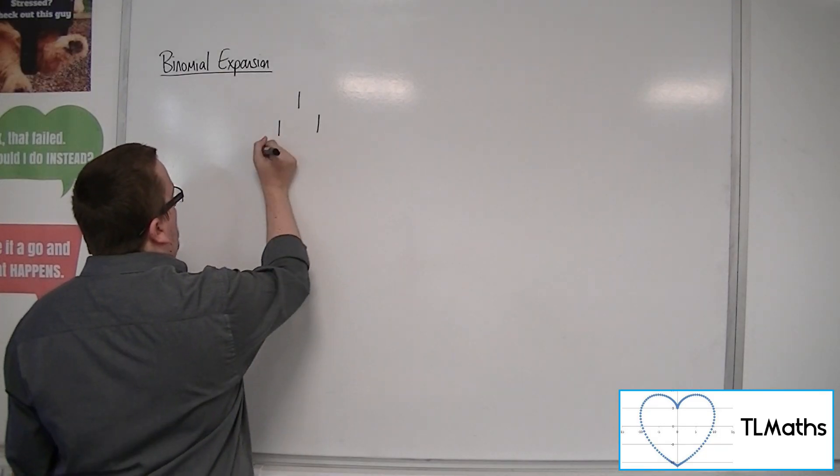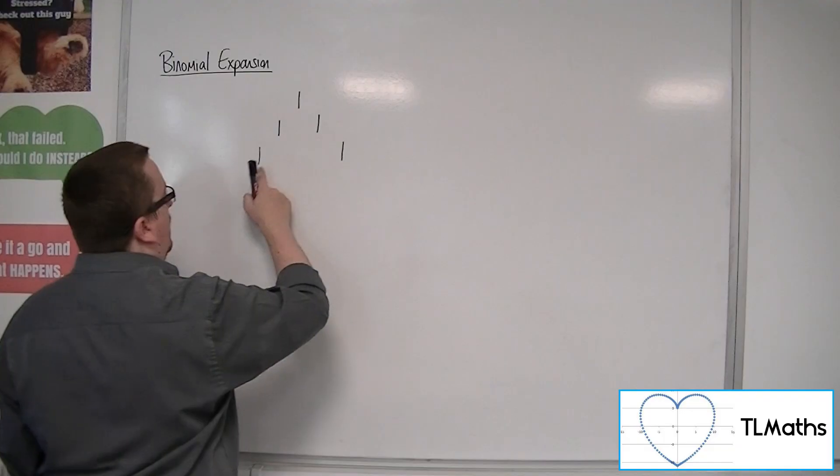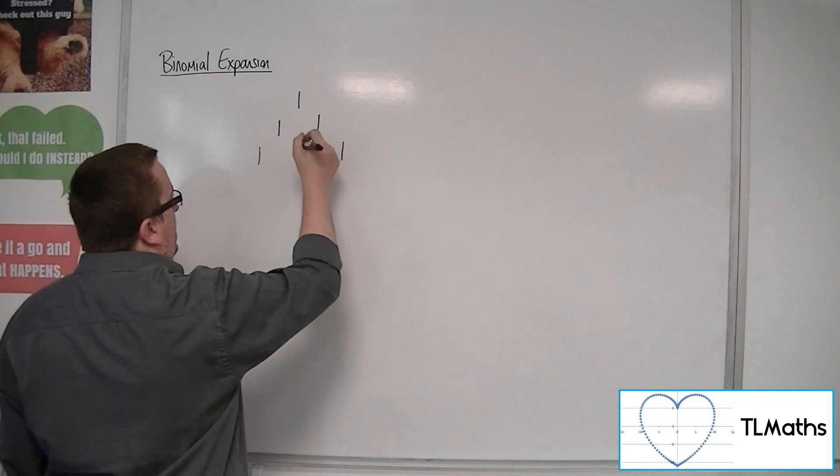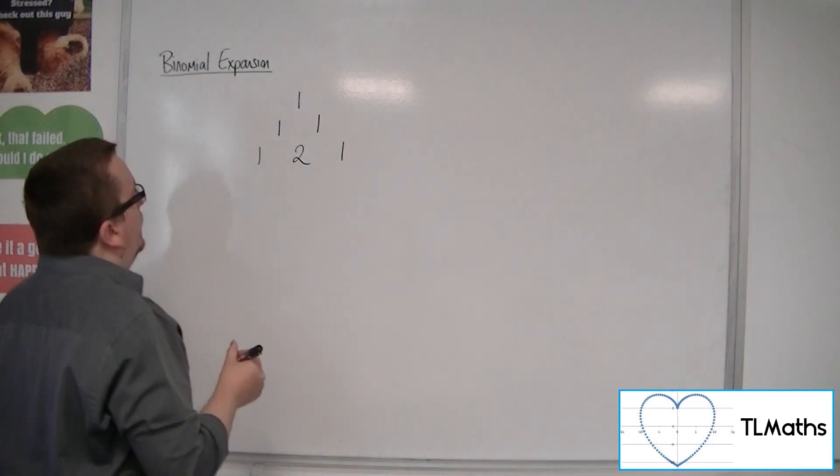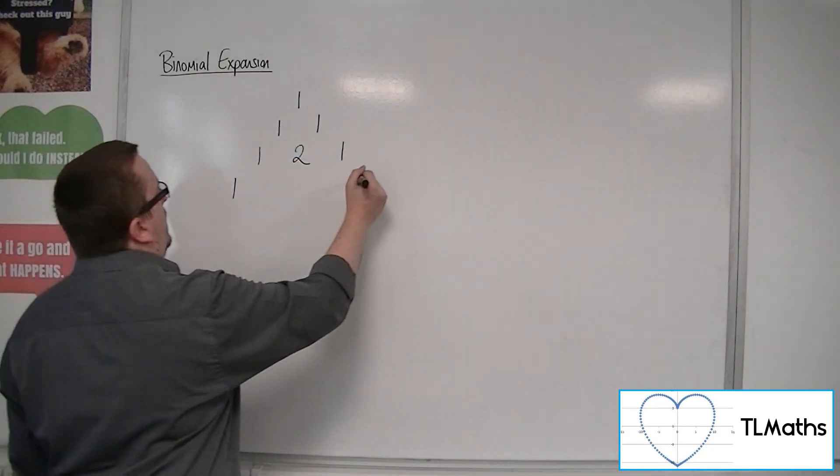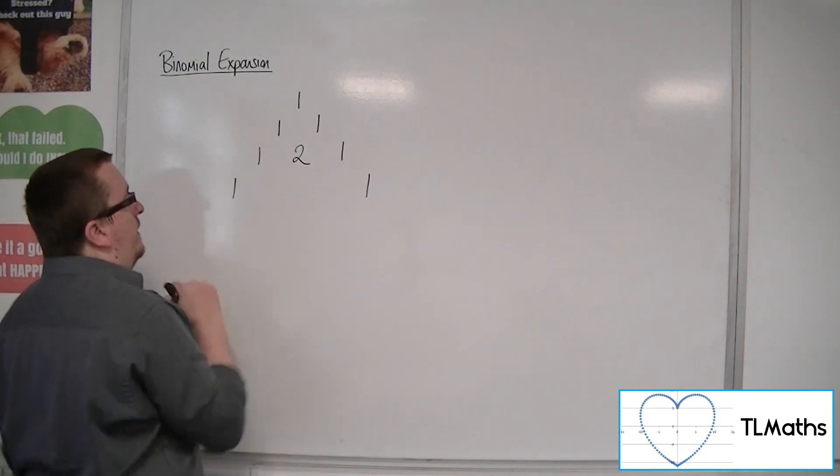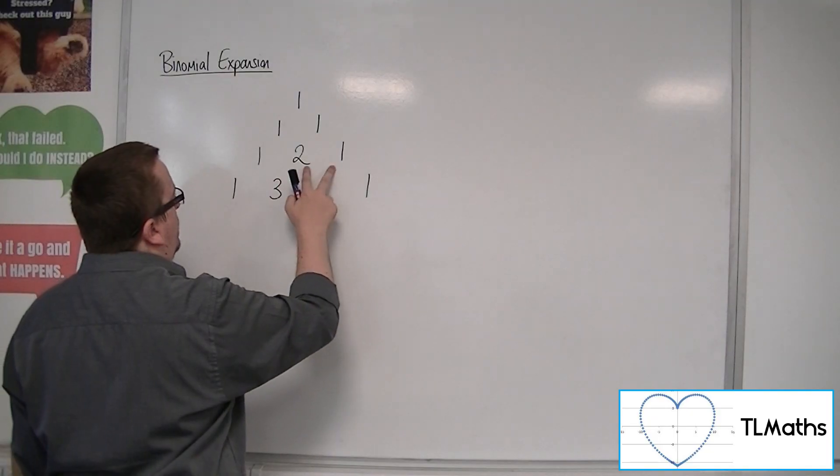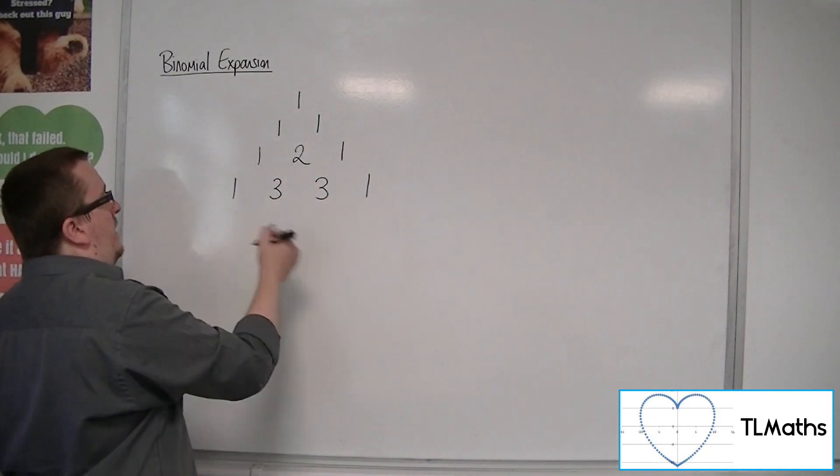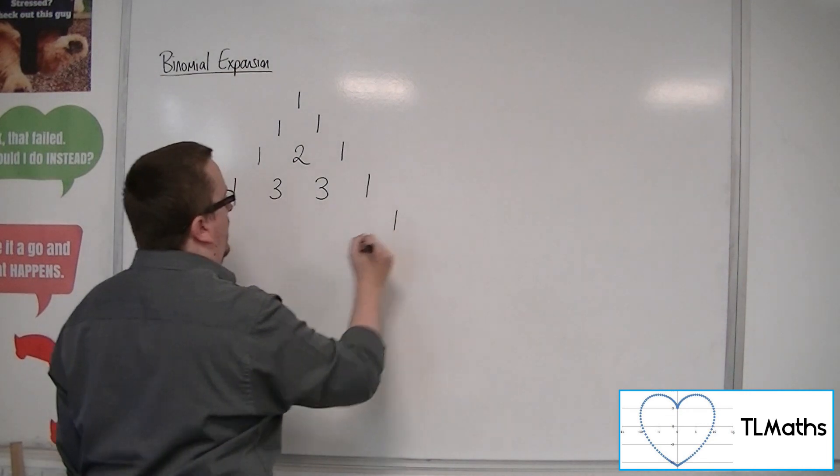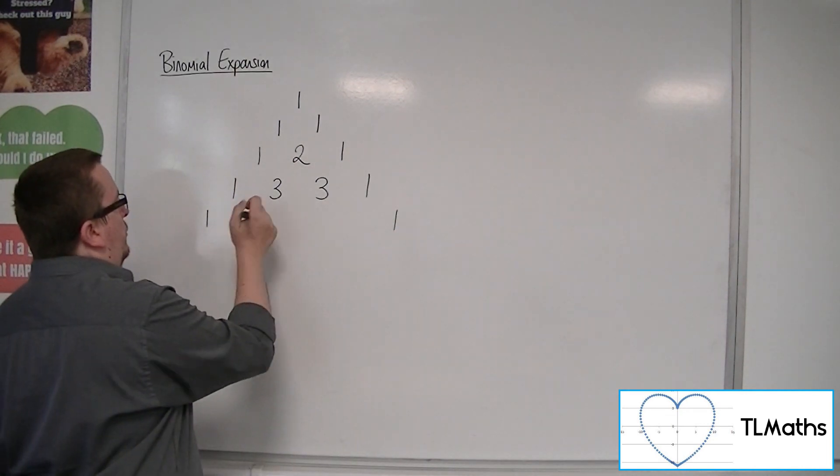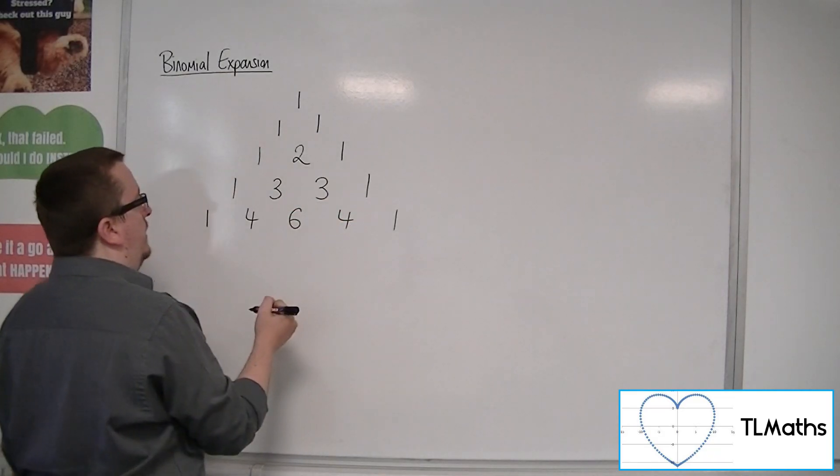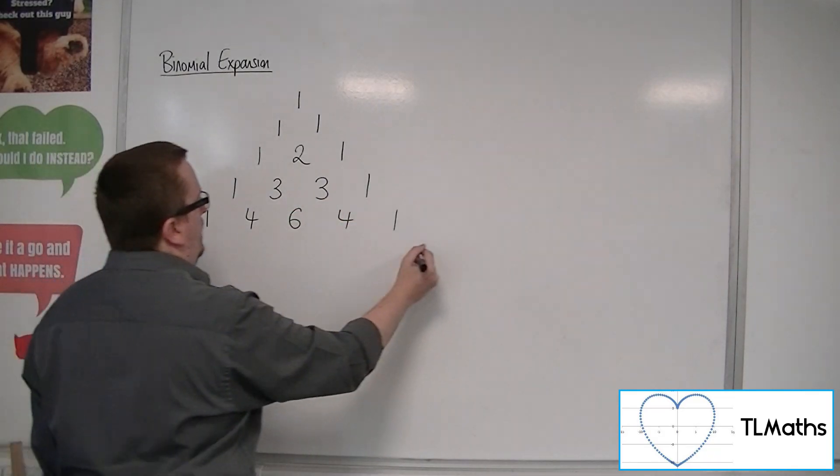The next row would have 1, 1 either side, and the number in the middle is 1 plus 1, which is 2. The next row: 1 and 2 makes 3, 2 and 1 makes 3. The next row would be 1, then 1 plus 3 is 4, 3 plus 3 is 6, 3 plus 1 is 4, then 1.